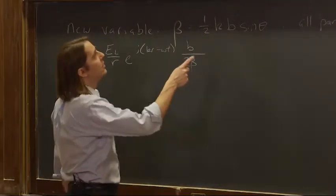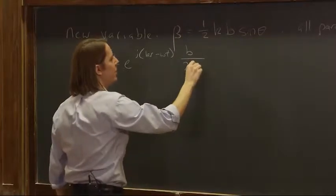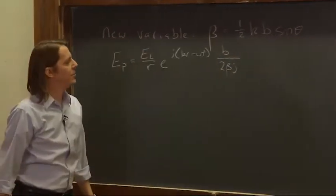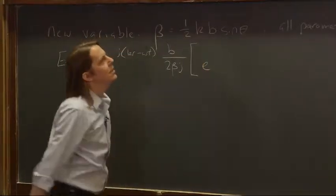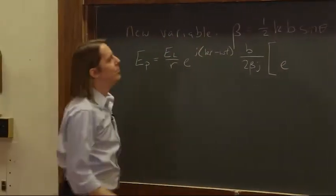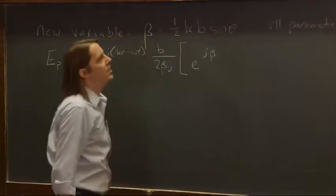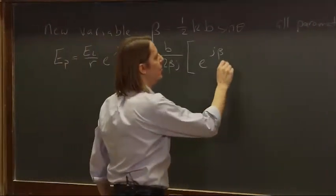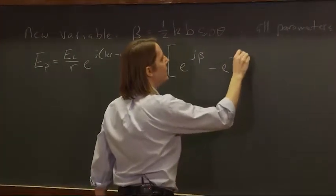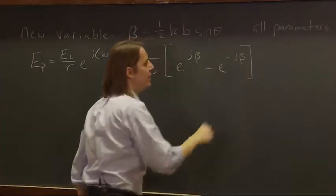We also need a j, because there was a j in the bottom, so make it imaginary. And then this part will become e to the j beta. It was j kb sine theta over 2, so we're just multiplying j beta minus e to the minus j beta.